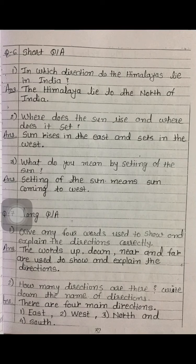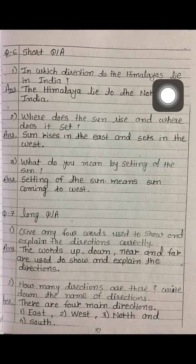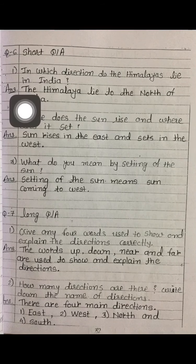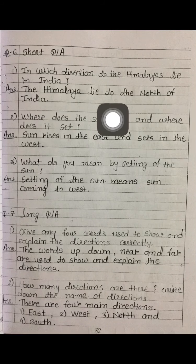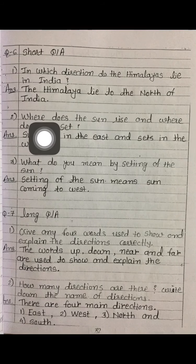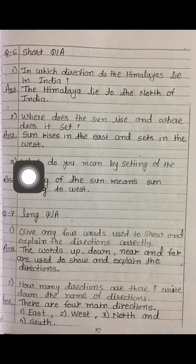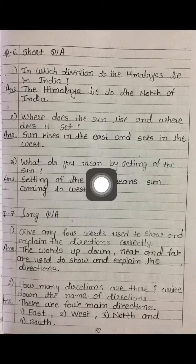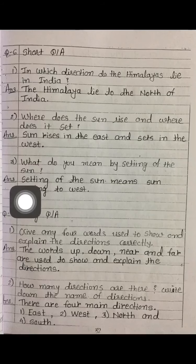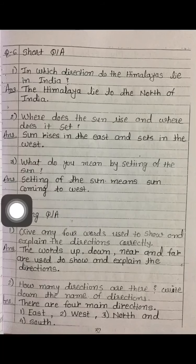Let us repeat the short question answers. First: in which direction do the Himalayas lie in India? Answer: the Himalayas lie to the north of India. Second: where does the sun rise and set? Answer: sun rises in the east and sets in the west. Third: setting of the sun means sun coming to the west.